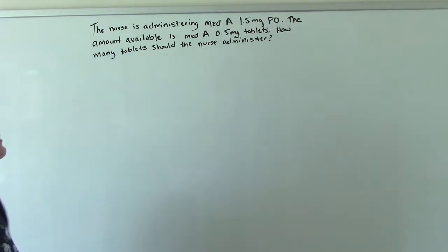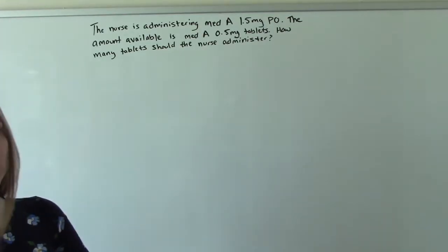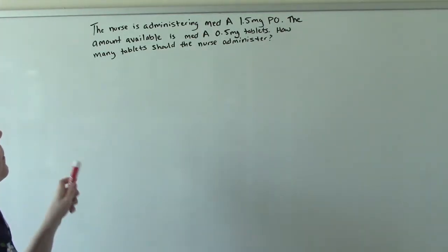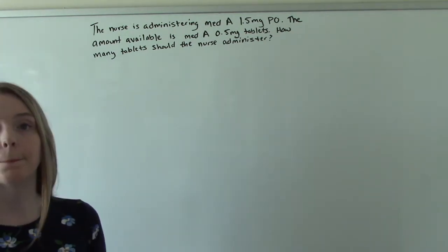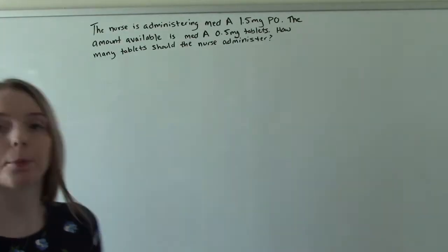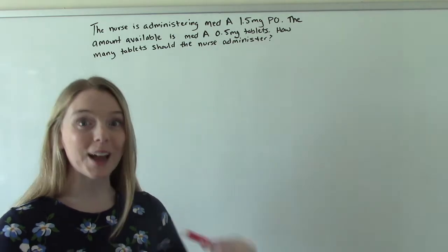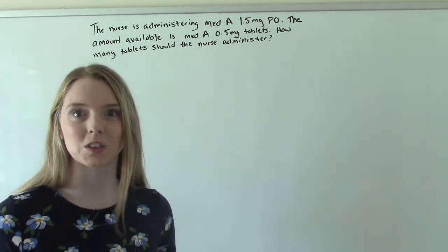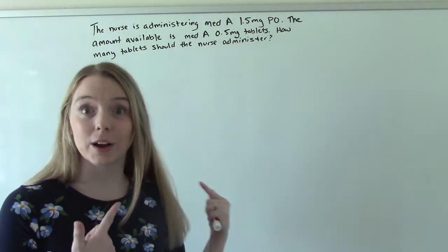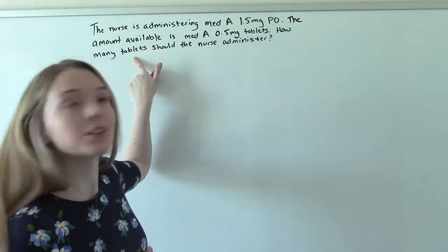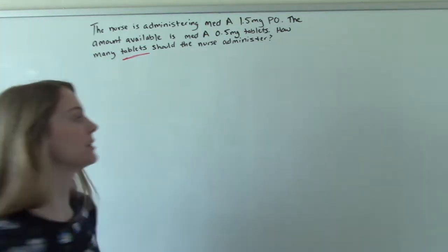Our question here is: the nurse is administering medication A, 1.5 mg PO. The amount available is medication A, 0.5 mg tablets. How many tablets should the nurse administer? Sometimes this is the hardest part — just figuring out what does it want from me. So what does this question want from us? It wants to know tablets. So let's put tablets in our answer.